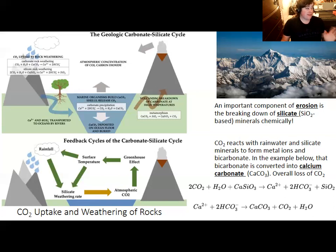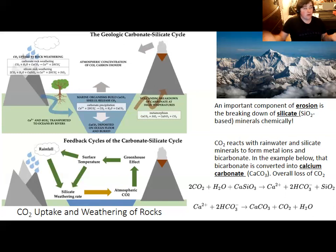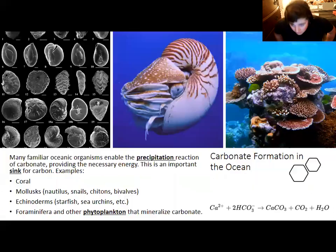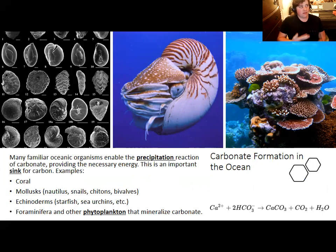On a human time scale, erosion is not going to make a major change in how much CO2 is left in the atmosphere. It's an interesting part of the carbon cycle but has really nothing to do with the current climate crisis. However, it is very important as the explanation for where the calcium that makes up ocean calcium carbonate comes from — it comes from rocks weathered on land.